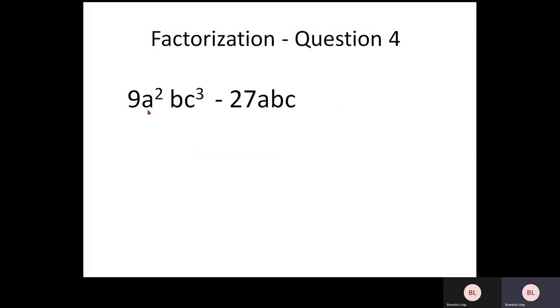The last question here, 9A squared BC to the power of cube minus 27ABC. What you can actually pull out here is the 9 because 27, it consists of 9 inside here. So when you pull out the 9, this term becomes 1 here.